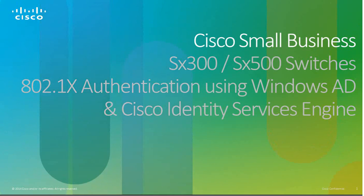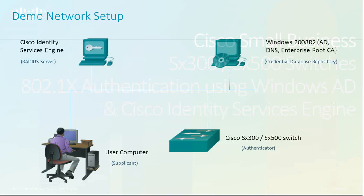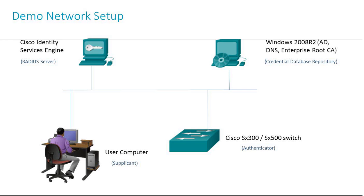In this demonstration, we will be using Windows Protected EAP as the .1x authentication type. Cisco ISE is performing the RADIUS server function. Windows Active Directory is the external database for the ISE. The Cisco switch will be the authenticator.